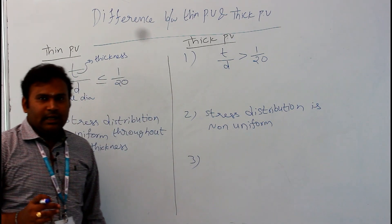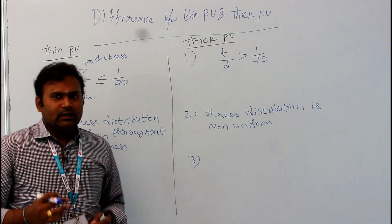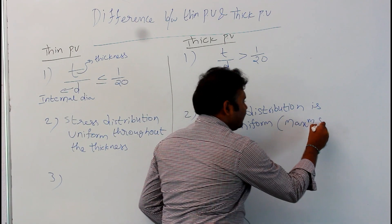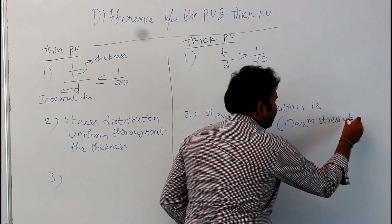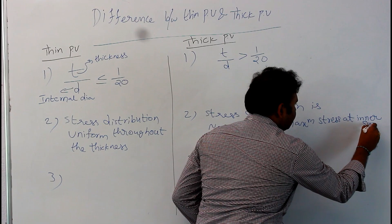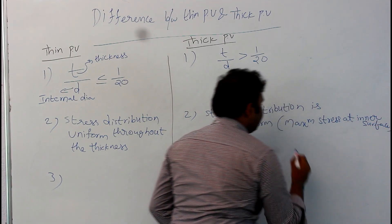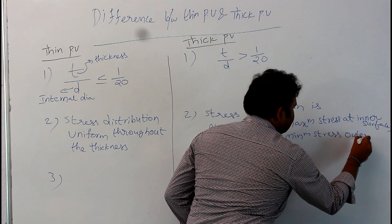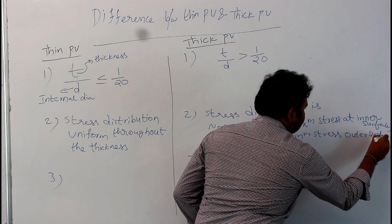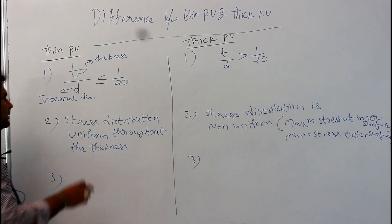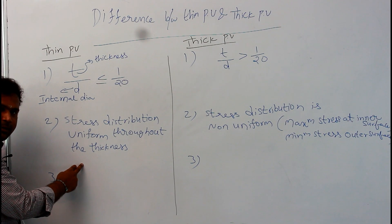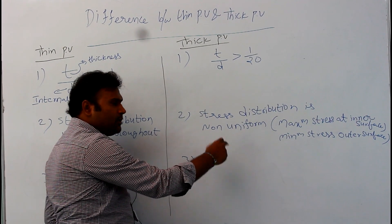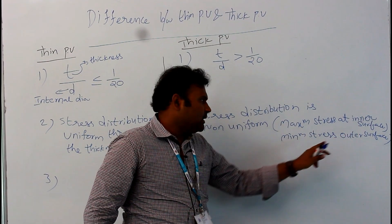Non-uniform means the stress varies from the inner surface to the outer surface. The maximum stress is at the inner surface and the minimum stress is at the outer surface, whereas in a thin vessel the stress distribution is uniform throughout the thickness.